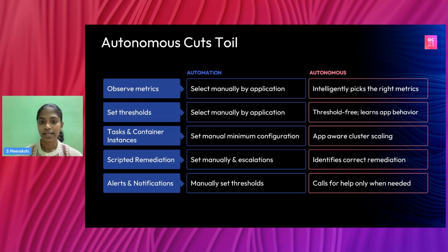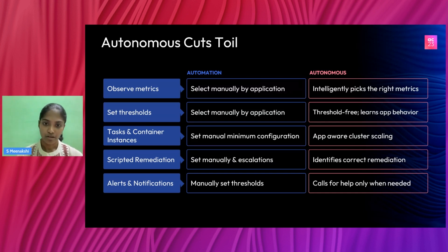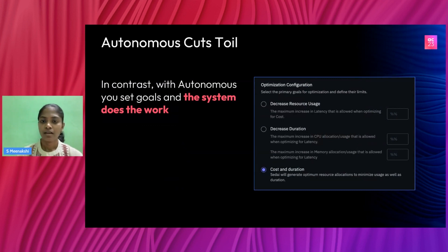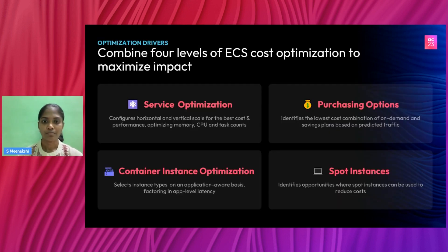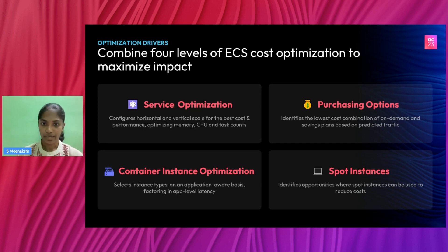With automation, there are a lot of challenges because it involves a lot of manual configuration — you have to manually set thresholds and come up with the metrics you need to monitor. But with an autonomous system, it studies the behavior of the application and adapts accordingly. When we talk about optimizing a service, we care about whether we're looking to improve performance or reduce cost. All you have to do is let the system know your goals, then sit back and let the system work its magic.